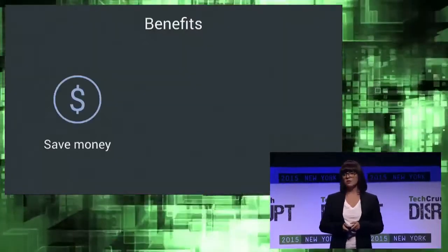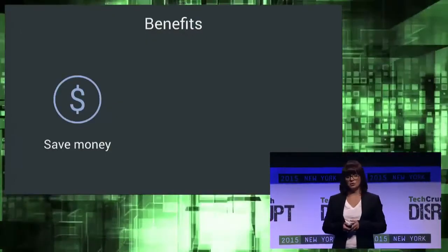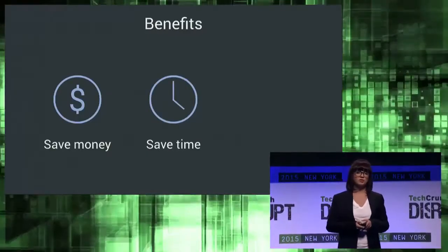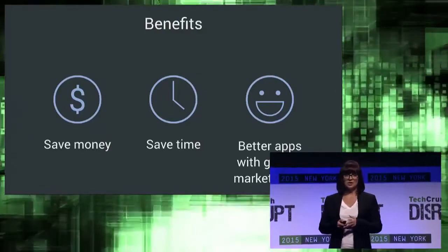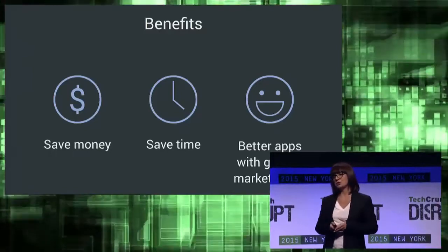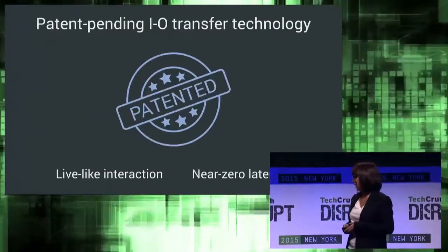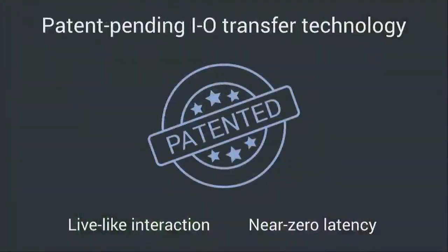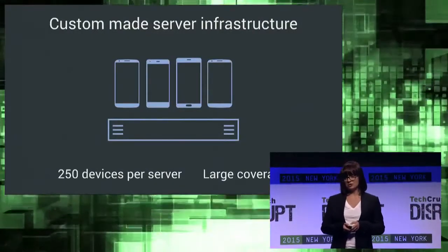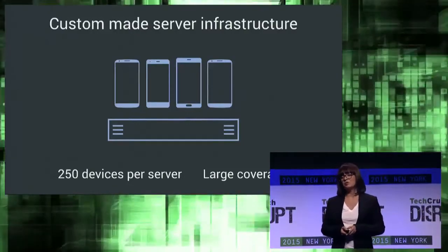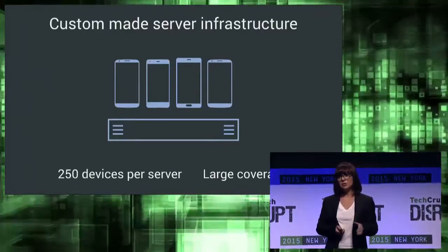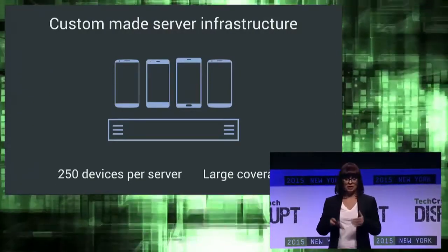The benefits are obvious. You save money — you can access any device anytime for a fraction of the cost. You save time — your team works much more efficiently so they can build really cool stuff and deploy faster. You create better apps with greater market reach, meaning you don't have to limit your target group simply because you can't afford to purchase all those devices. As with every magic trick, there are hundreds of hours behind this technology. We created a patent-pending input-output transfer technology that allows lifelike interaction with nearly zero latency. We created a custom-made server infrastructure where one server can support up to 250 devices — we started off with seven — covering much larger geographical areas, meaning fewer data centers, fewer servers, and higher gross margins.